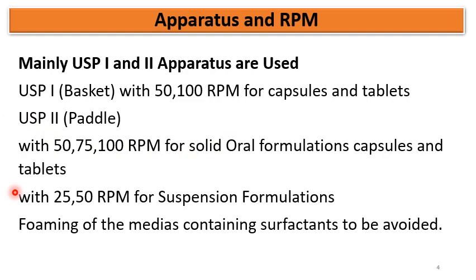Regarding RPM selection: when USP-1 basket apparatus is used, the RPM is generally kept at 50 or 100 RPM. USP-1 basket apparatus is mainly used for oral capsules and tablets. For USP-2 paddle apparatus, the RPM can be 50, 60, 75, or 100 RPM depending on the oral solid formulation. If heap or cone formation is observed at the bottom of the dissolution bowl, the RPM is increased. Generally, the standard RPM is 50 RPM.